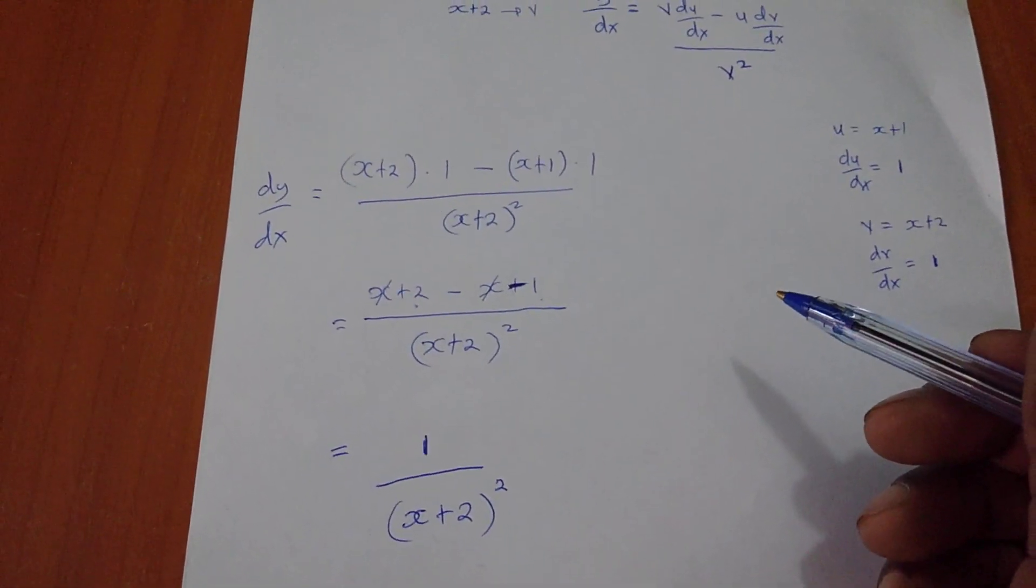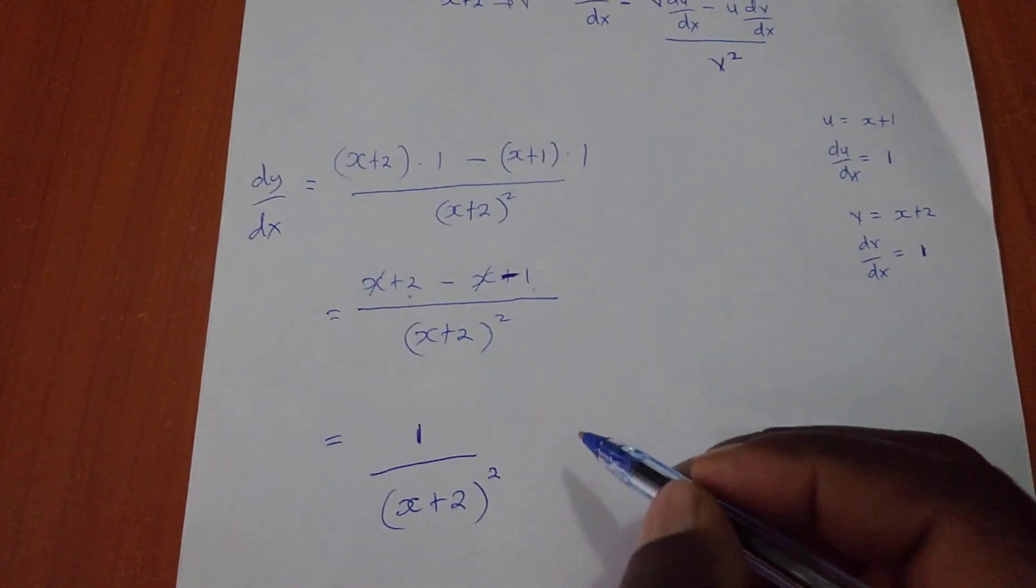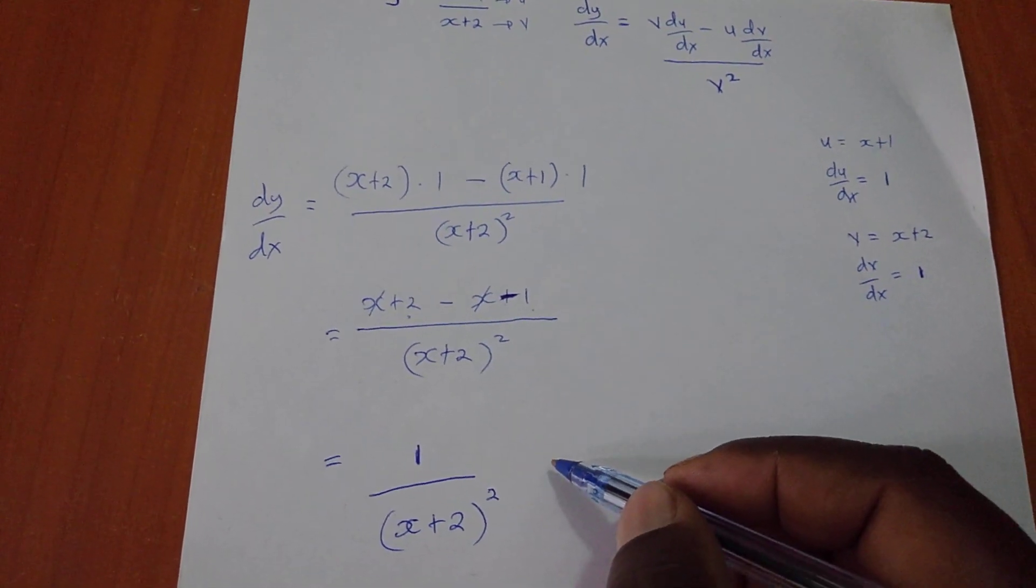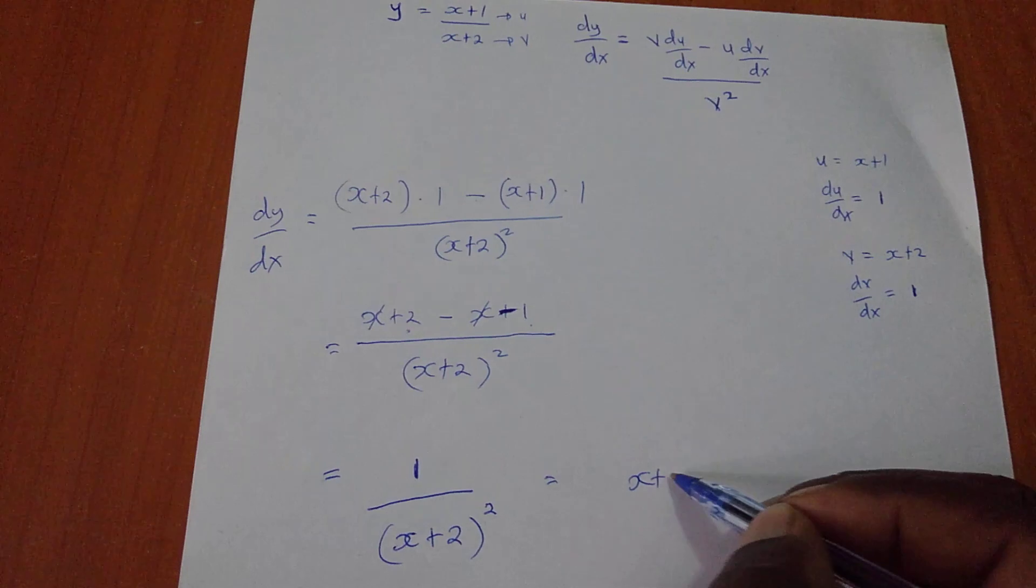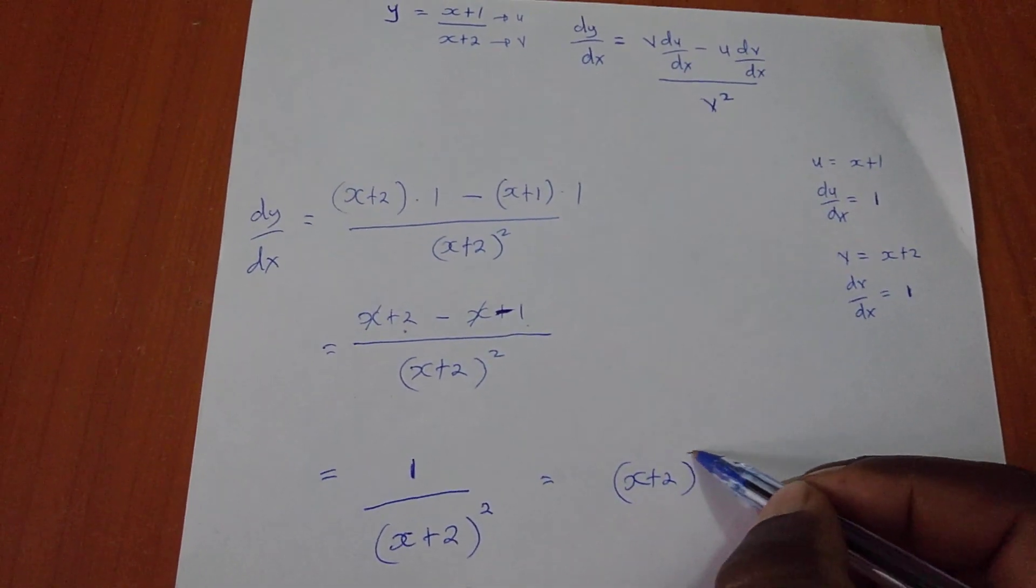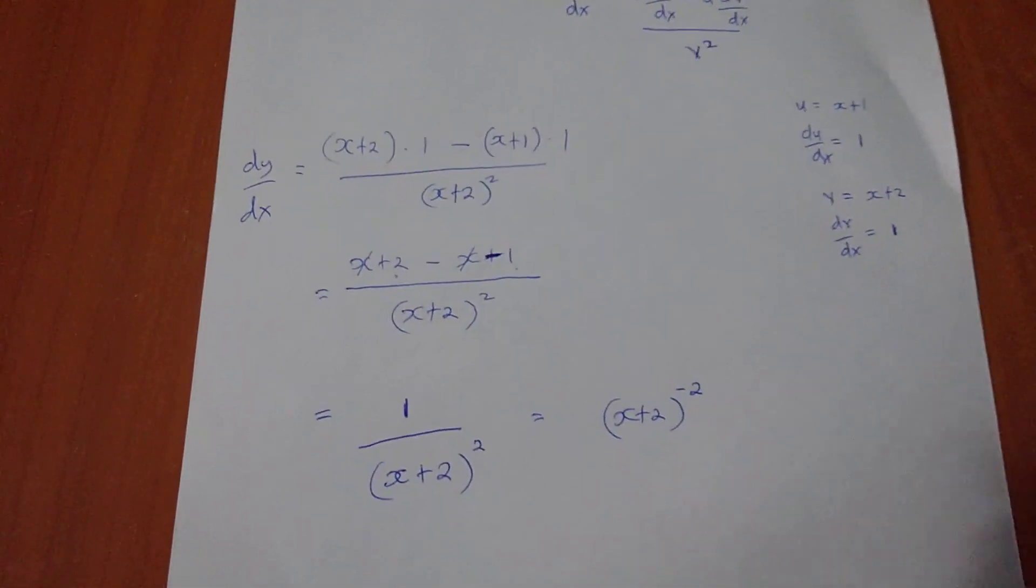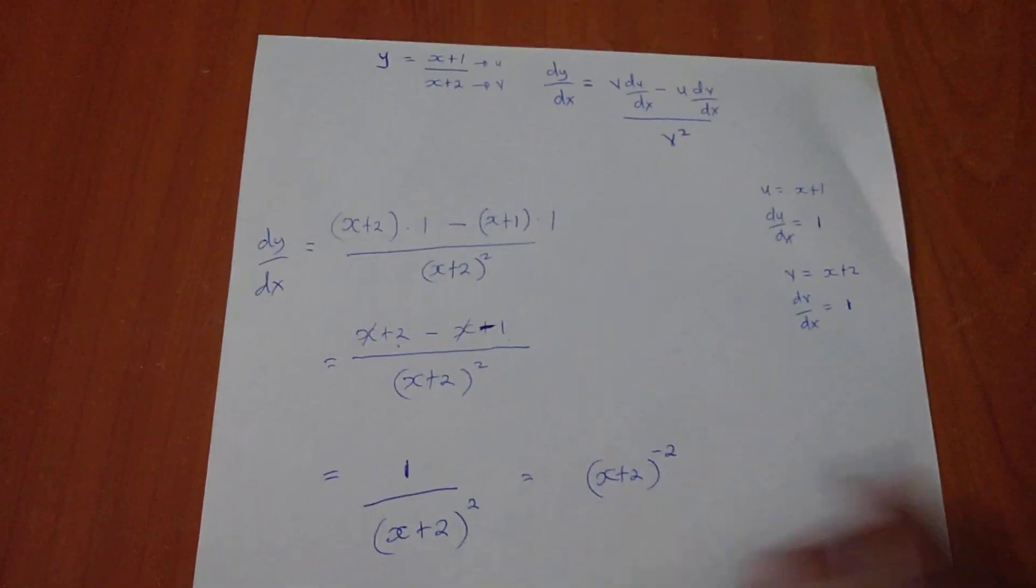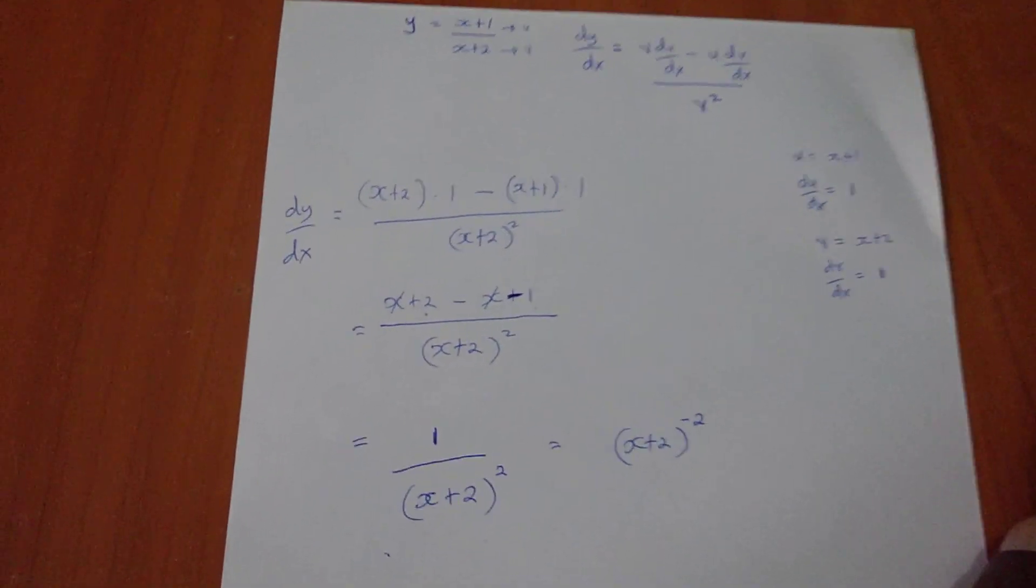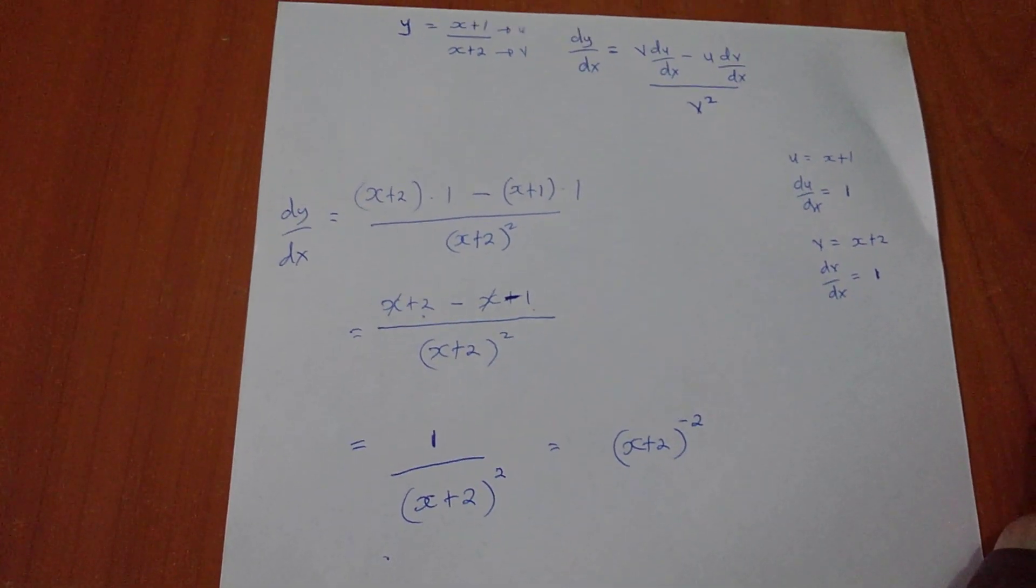I hope you are following. Of which some people would prefer writing this as x plus 2 power negative 2, which is still okay. So, this is our dy/dx. So, making the quotient rule simpler, I have tried to show you.